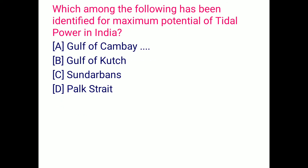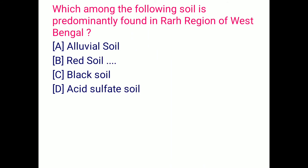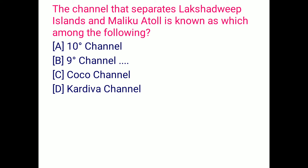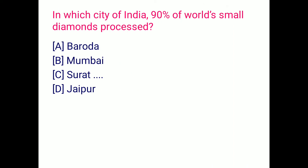Which among the following has been identified for maximum potential of tidal power in India? That is the Gulf of Cambay, option A. Which among the following soil is predominantly found in the rock region of West Bengal? That is red soil, option B. The channel that separates Lakshadweep Islands and Minicoy is known as the 9-degree channel, option B. Which city of India processes 90 percent of the world's small diamonds? Surat, option C.